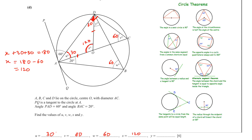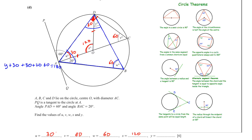Now we are left with y. We have a triangle with all angles known except y. Adding all the values: y plus 140 equals 180, so y equals 180 minus 140, which is 40.